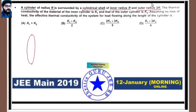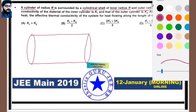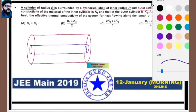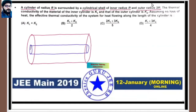Let me draw this: the inner cylinder has radius R and the outer cylinder has radius 2R. The thermal conductivity of the inner cylinder material is k1 and the outer one is k2.